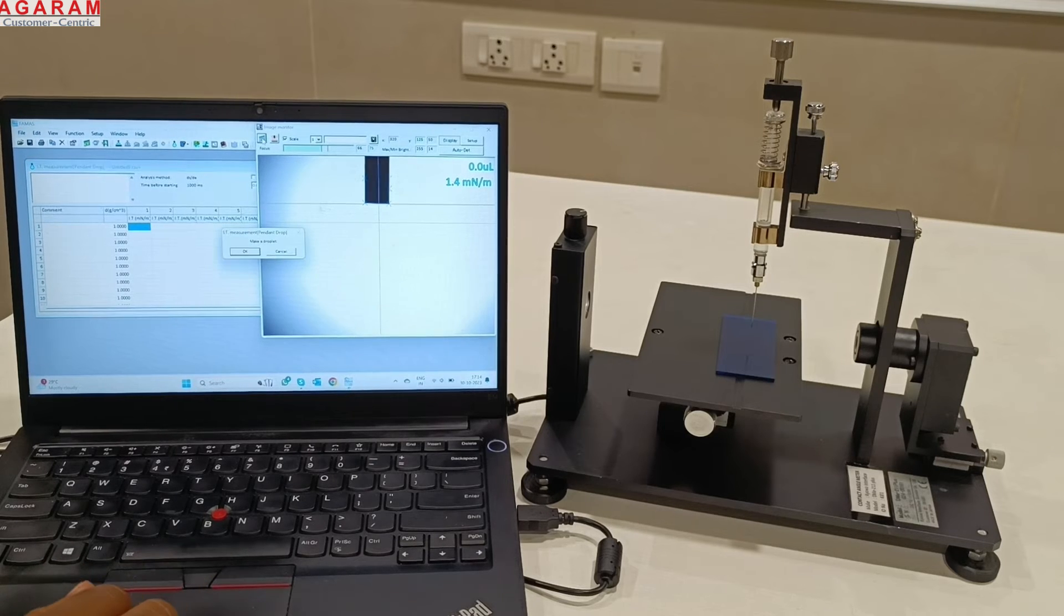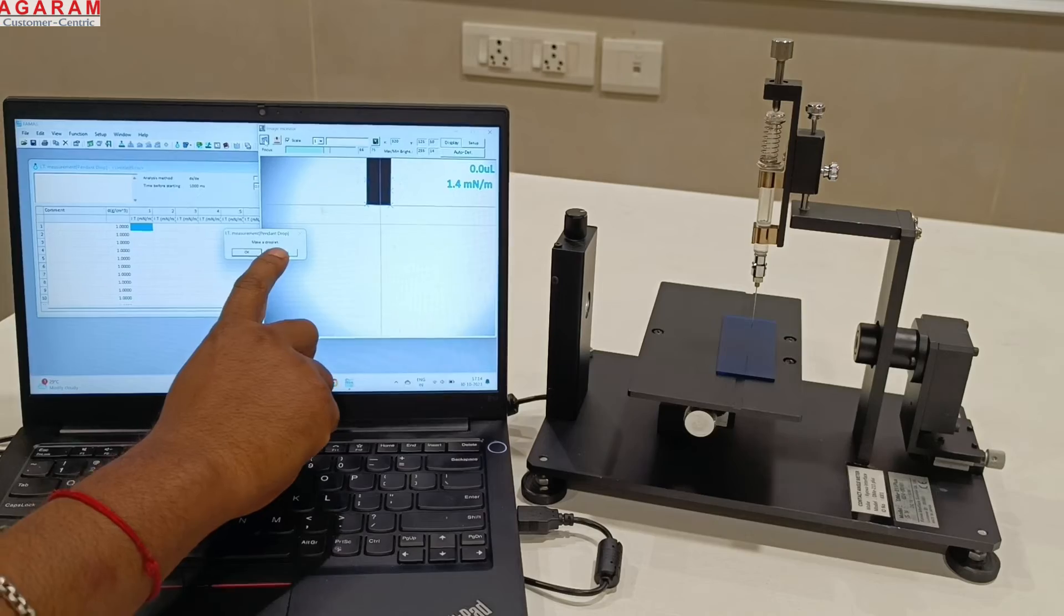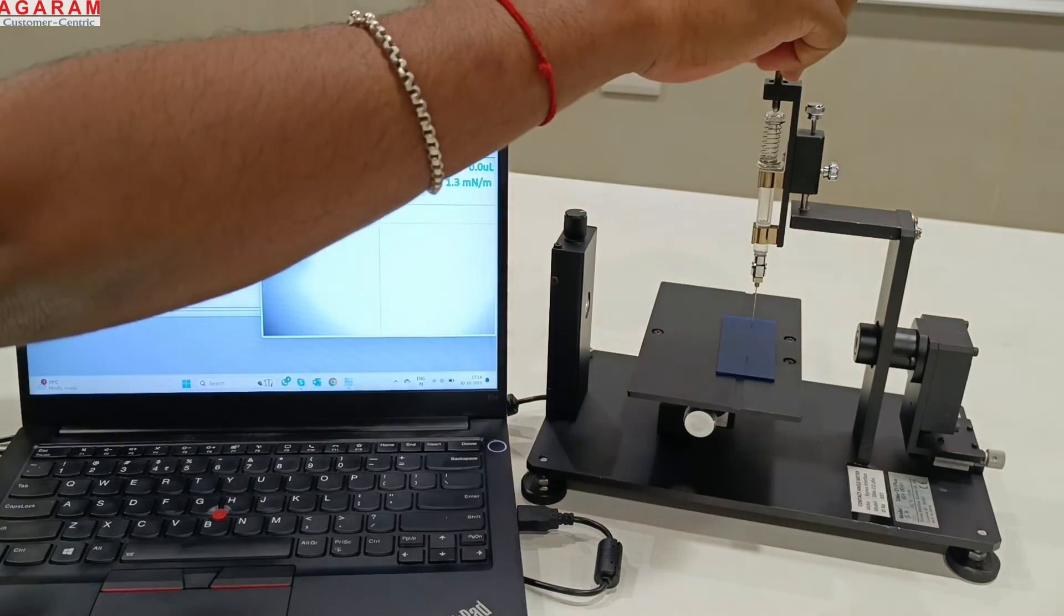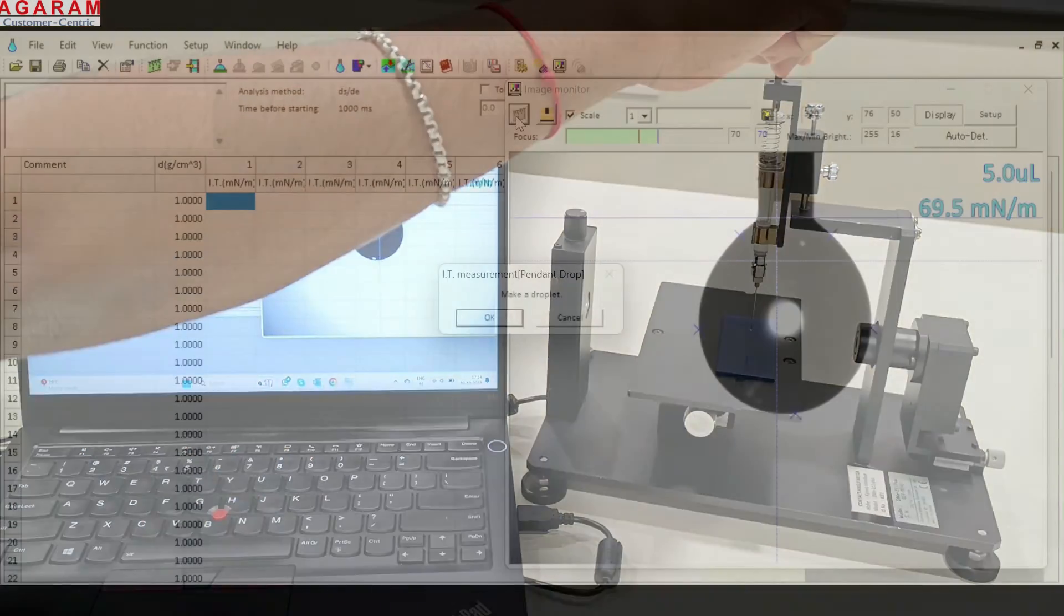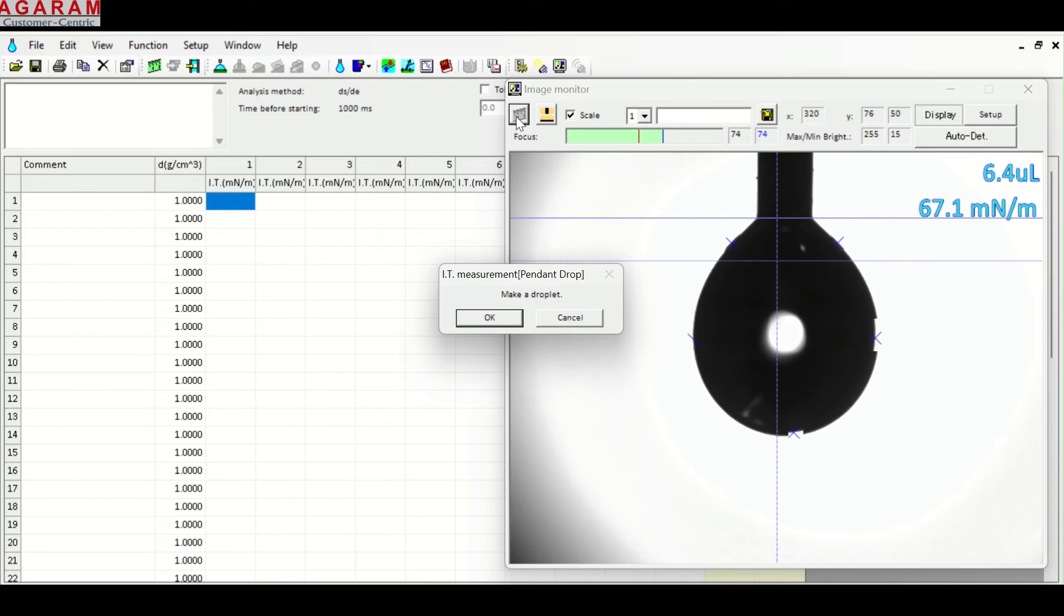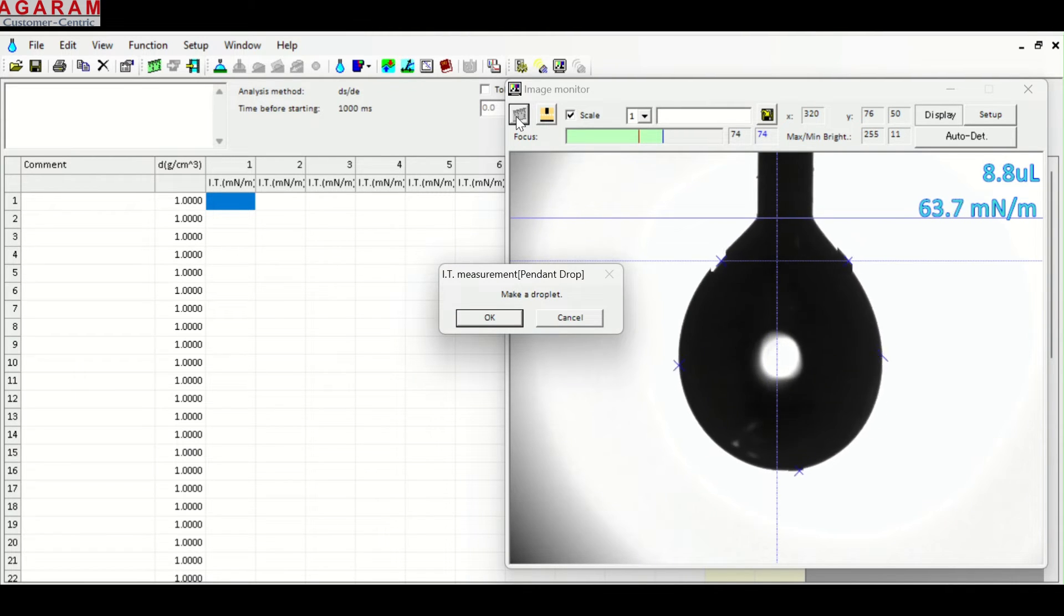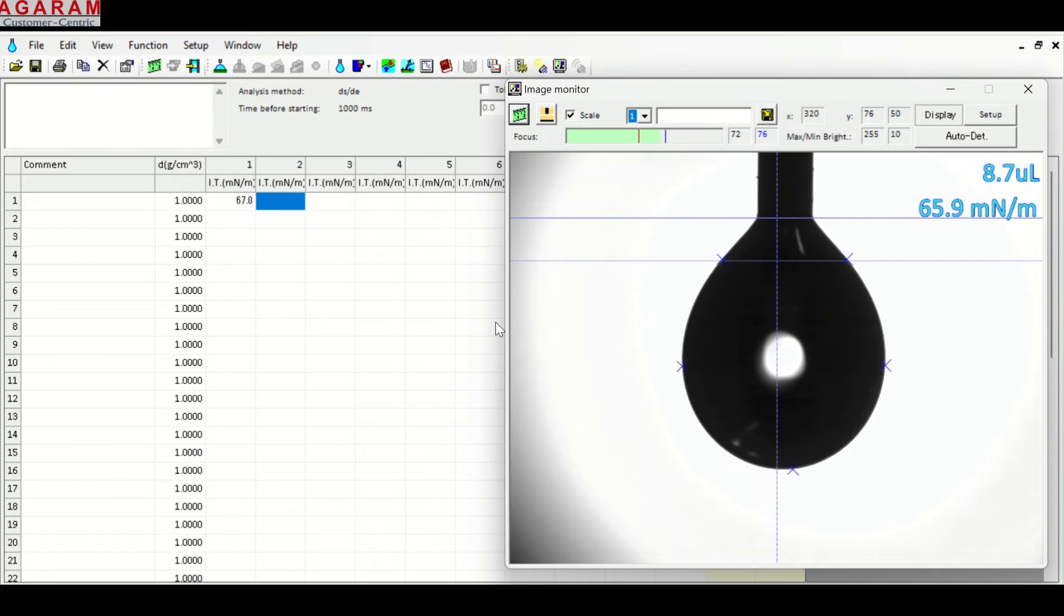DME211 Plus excels in measuring surface tension using pendant drop method. This is particularly effective where sample volume is less than 1 milliliter. By dispensing the liquid via needle, the surface tension is calculated by the software and results are displayed in millinewton per meter.